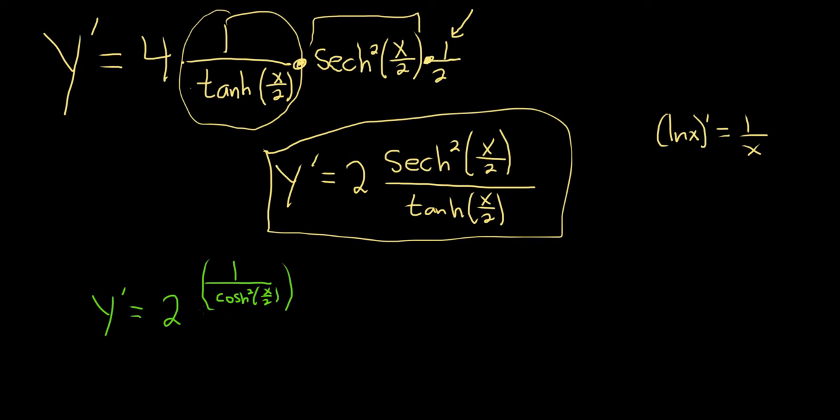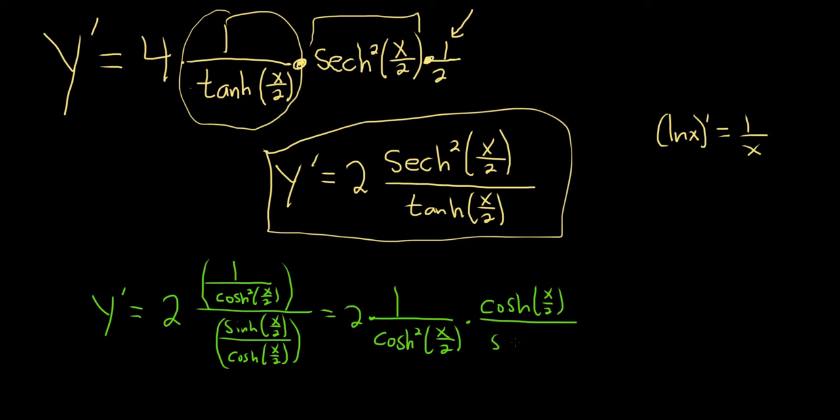That's in the numerator. And in the denominator, it's sinh of x over 2 times cosh of x over 2. So this is equal to 2 times, so basically when you divide, you multiply by the reciprocal. So we'll have 1 over the hyperbolic cosine squared of x over 2 times the reciprocal, hyperbolic cosine of x over 2 over the hyperbolic sine of x over 2.